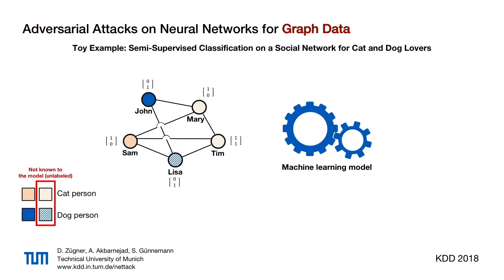In our paper, we study for the first time the much more complex setting of adversarial attacks on deep learning for graphs. These models have achieved great success recently, for example in the node classification task, and we show that these methods are highly vulnerable to attacks.